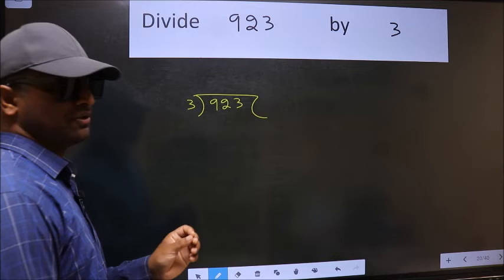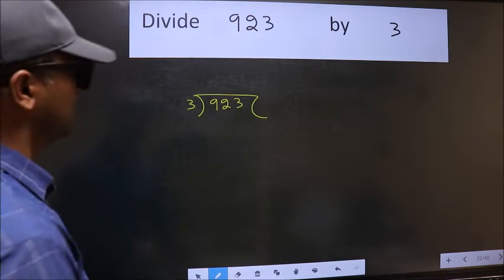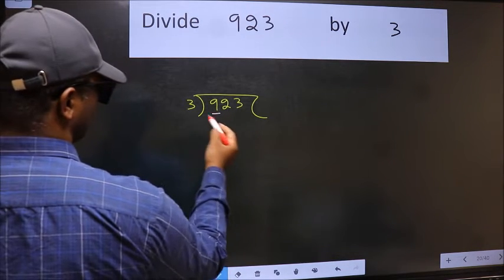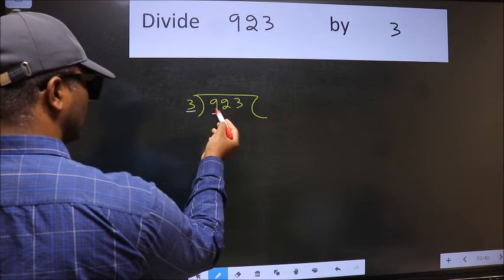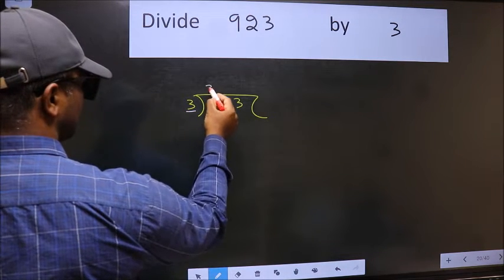This is your step 1. Next, here we have 9 and here 3. When do we get 9 in the 3 table? 3 times 3 is 9.